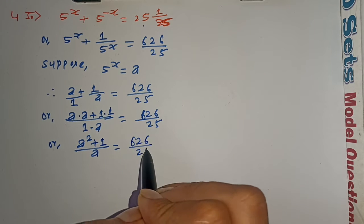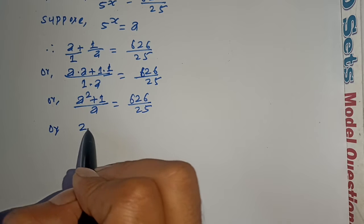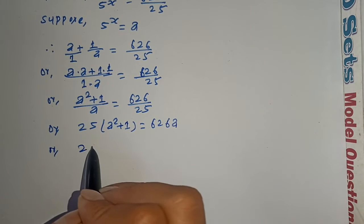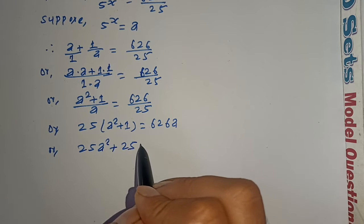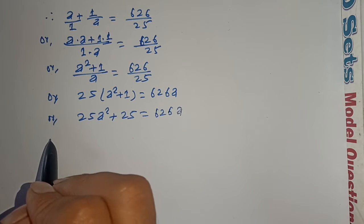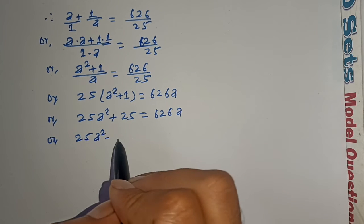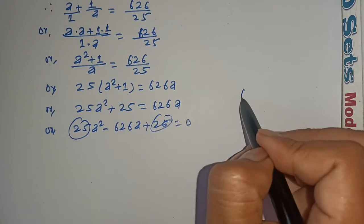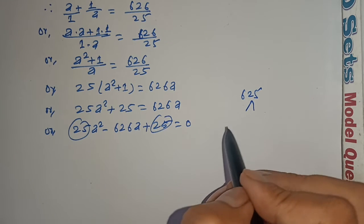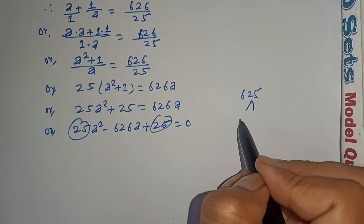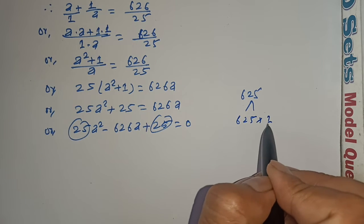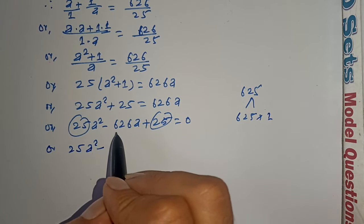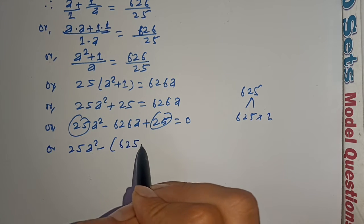Cross multiplying: 25a squared plus 1 equals 626a. So 25a squared minus 626a plus 25 equals zero. We need to factor this: 25 times 25 equals 625, and 625 plus 1 equals 626. So we split the middle term as 625a plus a, giving 25a squared minus 625a minus a plus 25 equals zero.